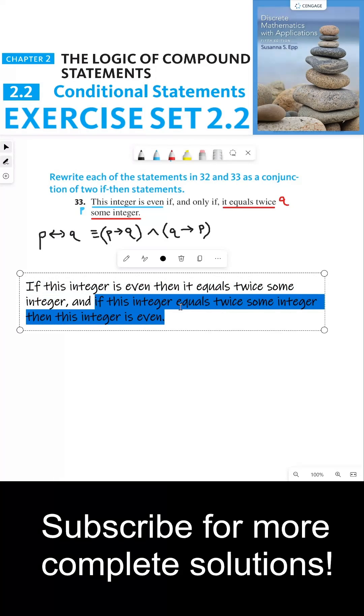And if this integer equals twice some integer, then this integer is even.